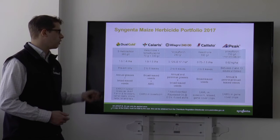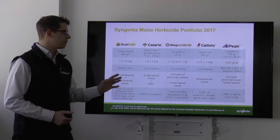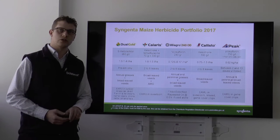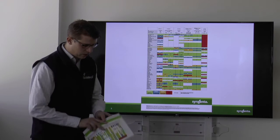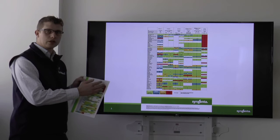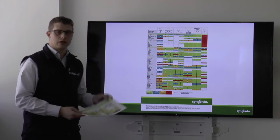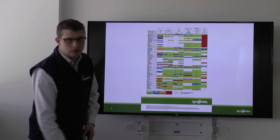So we can see we've got our Dual Gold as our pre-emergence, and then we have various post-emergence options. On the back of our new Maize brochure, we also have a list of the products and also what weeds they control. So a nice handy little guide for you when you're out in the field.